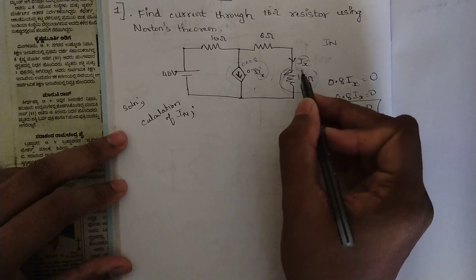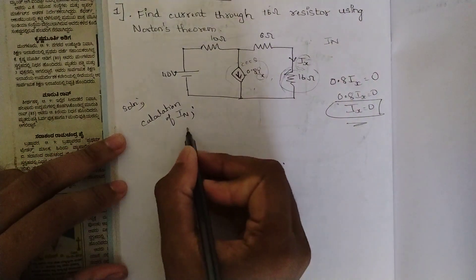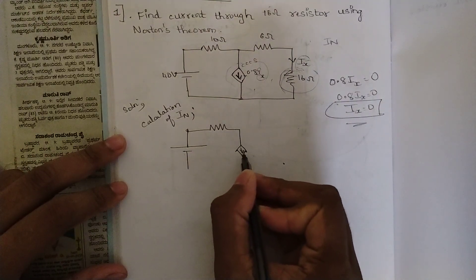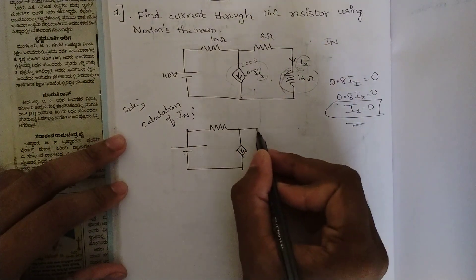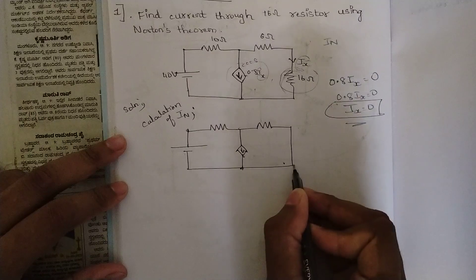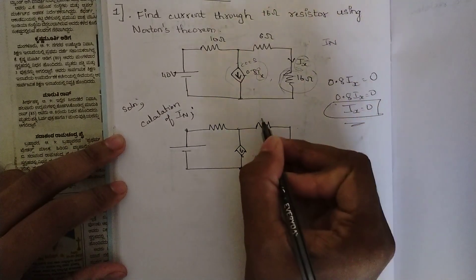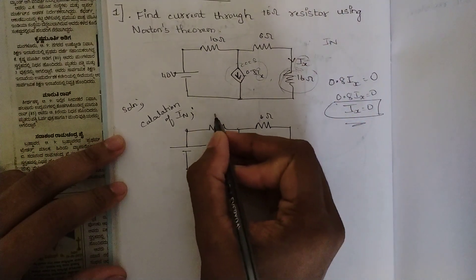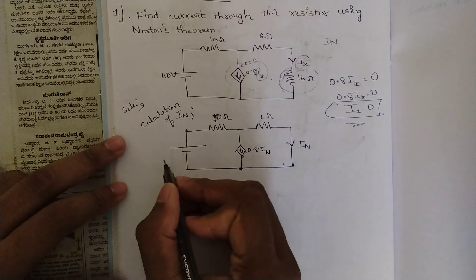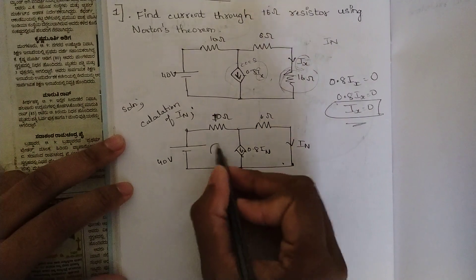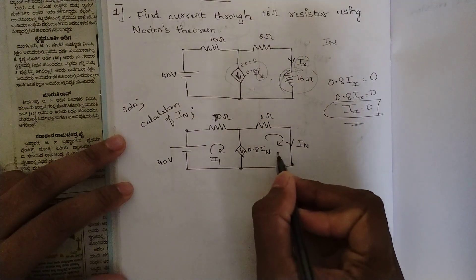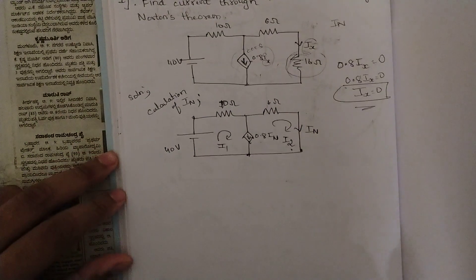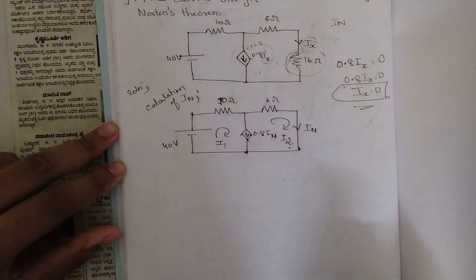For the calculation of IN, we replace the load resistance with a short circuit and redraw the circuit. We have a 6-ohm resistance, the short circuit (labeled IN), a dependent current source 0.8 IN, a 10-ohm resistance, and a 40-volt source. We name the two loops: loop one as I1 and loop two as I2.